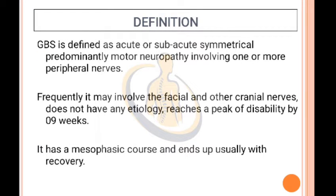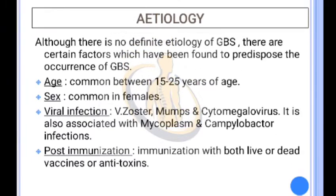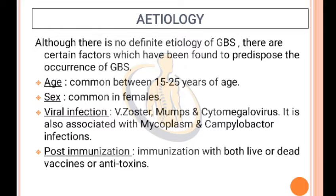Definition: GBS is defined as an acute or subacute, symmetrical, predominantly motor neuropathy involving one or more peripheral nerves. It may frequently involve the facial and other cranial nerves, does not have any definite etiology, reaches a peak of disability by 9 weeks. It has a monophasic course and usually ends with recovery.